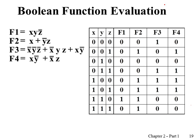Given a Boolean function, we can determine when it becomes one by constructing a truth table over all possible input combinations of variables X, Y, and Z. Function one becomes one only when X is one, Y is one, and Z is zero. A combined truth table is used for functions two, three, and four since they share the same variables. From the truth table, functions one, two, three, and four are all different from each other — no two functions are identical.